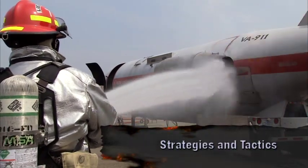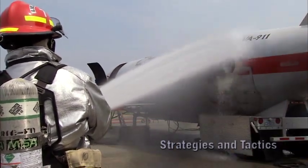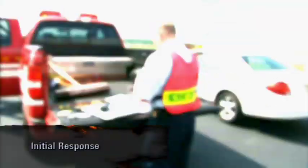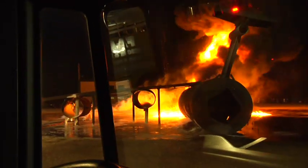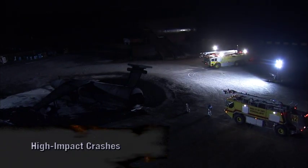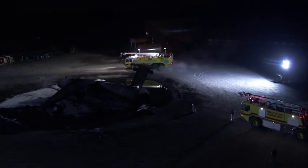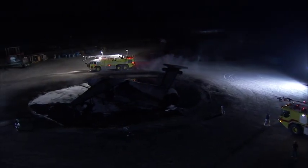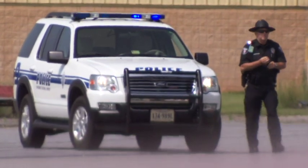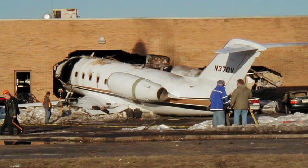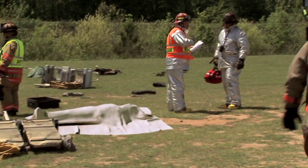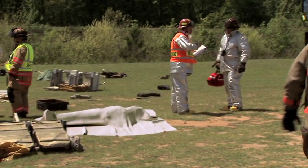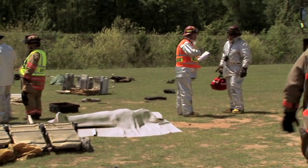Gaining control of an aircraft emergency situation requires the development of unique strategies and tactics. Consult passenger and cargo manifests, if available, to determine how many passengers and what types of cargo are on board. Use thermal imaging to locate hotspots for extinguishment and overhaul. The area of a major aircraft high-impact crash should be surrounded and divided into geographical quadrants, and security should be set up surrounding the entire vicinity. Efforts should be made to preserve the dignity of victims; bodies and debris should be protected, undisturbed, and shielded from media and bystanders.